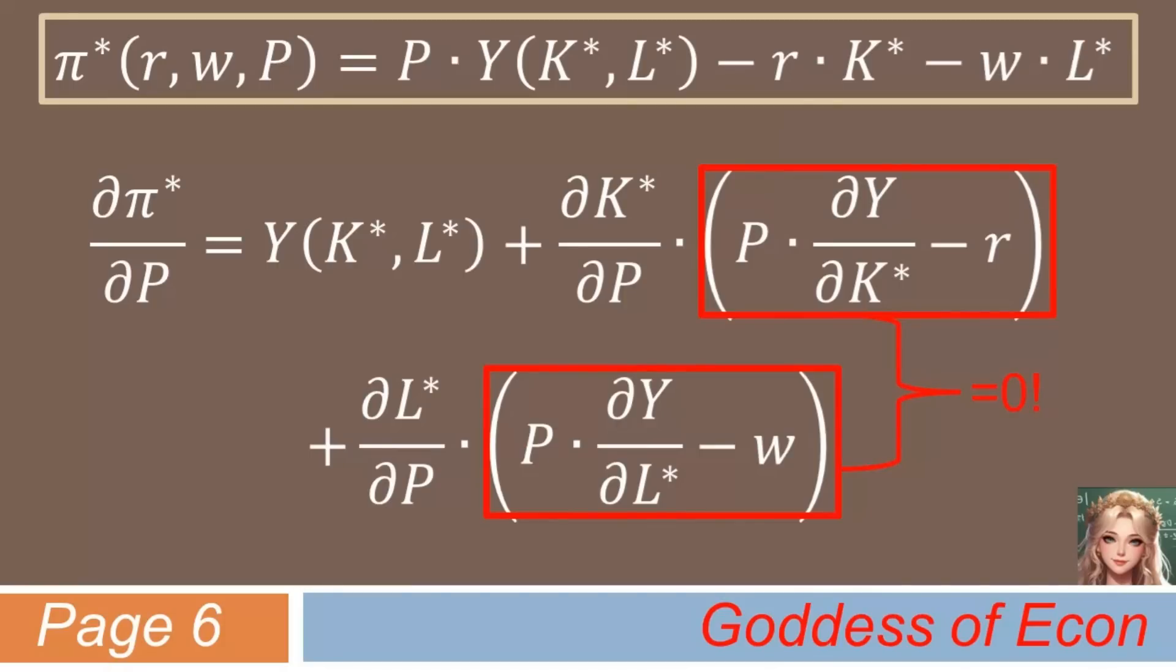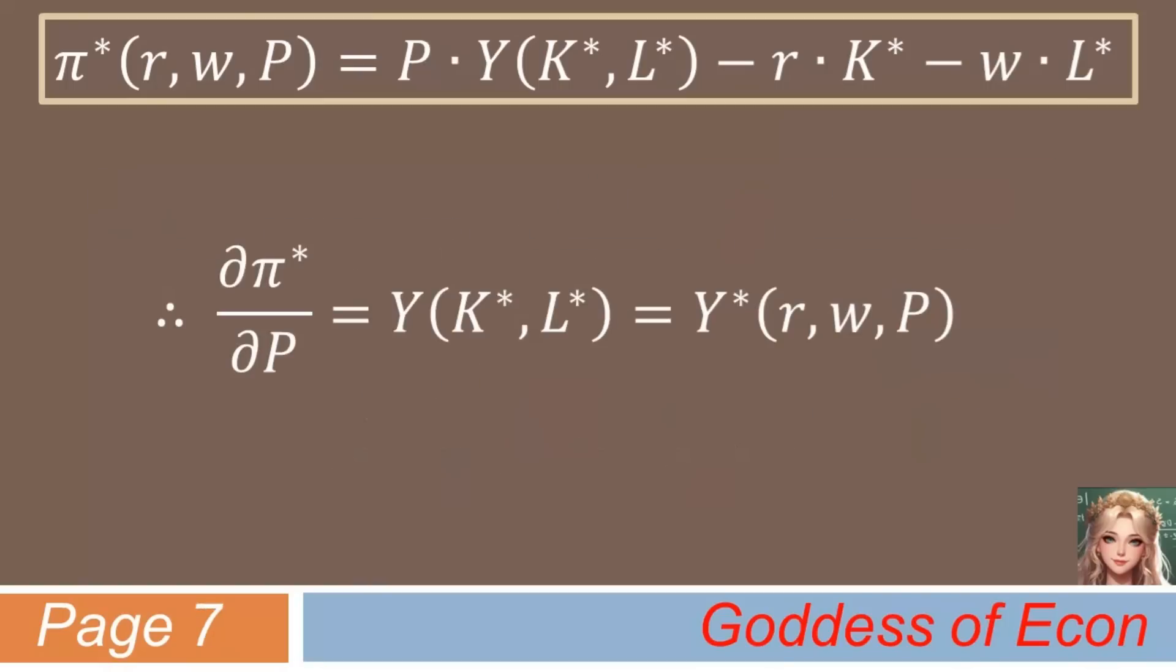Again, quite a neat result, isn't it? And as k* and l* are essentially functions of r, w, and p, the right-hand side of the equation can be rewritten as y* as a function of r, w, and p. This means that y* here is the optimal quantity of output produced given r, w, and p. In other words, y* is the supply function of the firm. Note that y* is a function of both of the input prices as well as the price of the output.